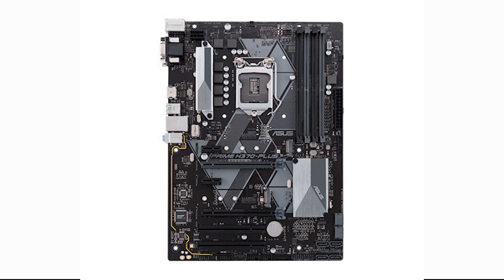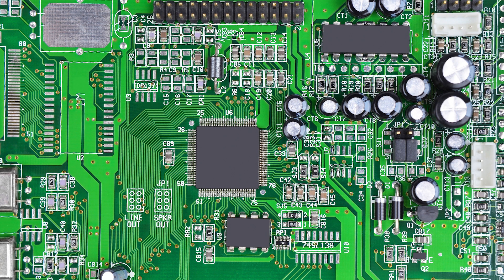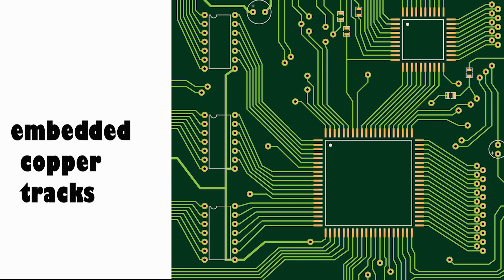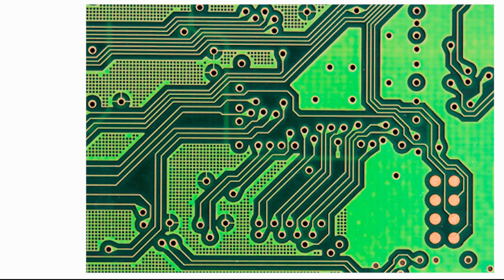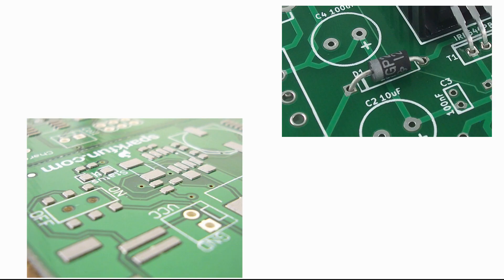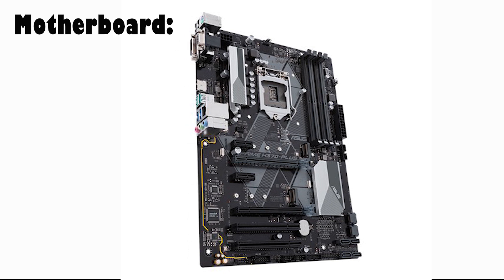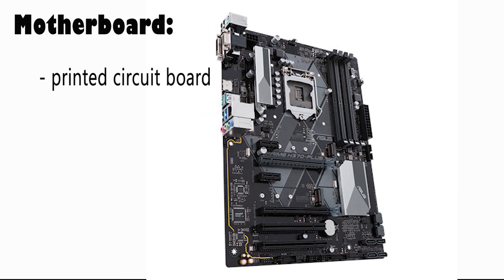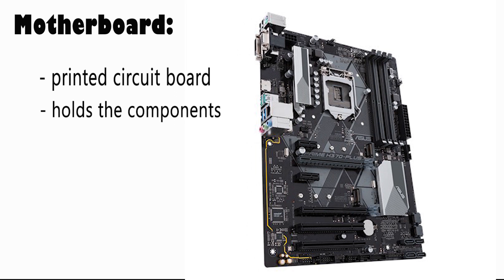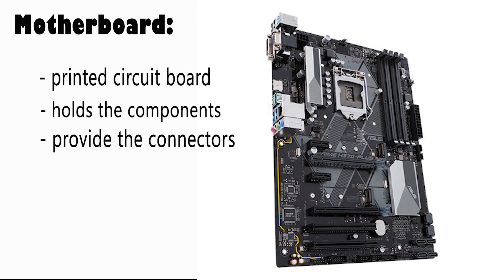The motherboard is the main part of a computer, so it is called the backbone of the computer. It is essentially a large printed circuit board, and the various lines you see are embedded copper tracks. These copper tracks are responsible for linking up the various parts and allow communication to take place between them. The computer's main circuit board hosts the CPU, RAM, connectors for the hard drive and optical drives, and expansion cards for video and audio, as well as connections to your computer ports.